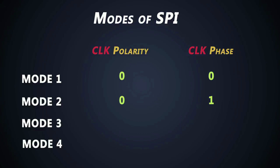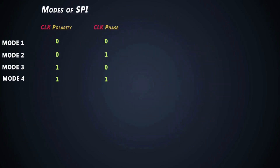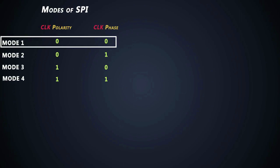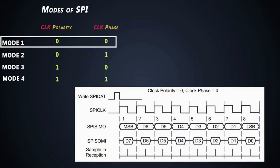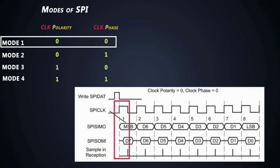Let's check this table. There are four different modes based on which the master and slave can communicate. In the first mode, where clock polarity is zero and clock phase is also zero, there is no delay for the clock pulses. The data is output immediately on the rising edge of the SPI clock, and input data is latched on the falling edge of the clock.